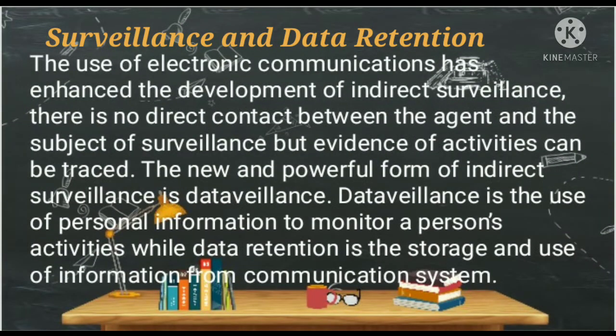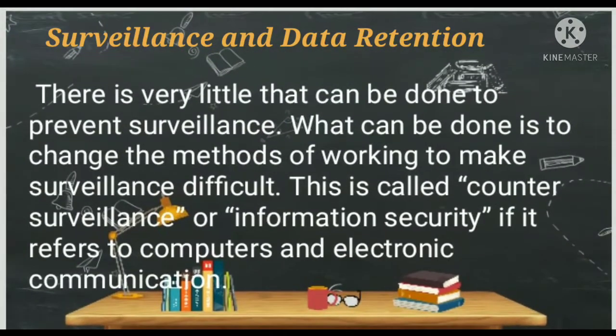Next is surveillance and data retention. The use of electronic communication has enhanced the development of indirect surveillance. There is no direct contact between the agent and the subject of surveillance, but evidence of activities can be traced. A new and powerful form of indirect surveillance is data surveillance — the use of personal information to monitor a person's activities — while data retention is the storage and use of information from communication systems. There is very little that can be done to prevent surveillance. What can be done is to change the methods of working to make surveillance difficult. This is called counter-surveillance, or information security if it refers to computers and electronic communication.